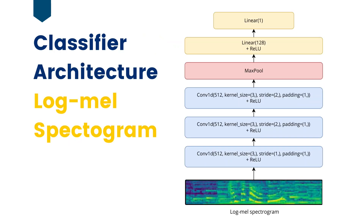Our detector is a binary classification neural network. The log-mel spectrogram of audio is sent through three 1D convolutional layers with ReLU activation, then a max pool layer followed by a linear layer with ReLU activation. The final activations are sent through a single linear node to obtain the logits.